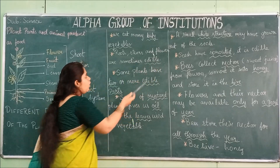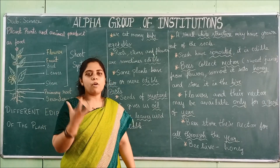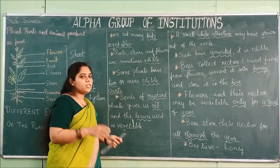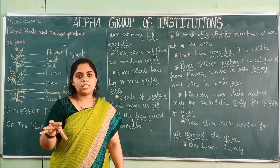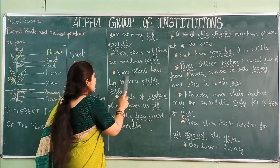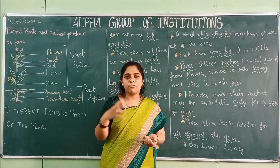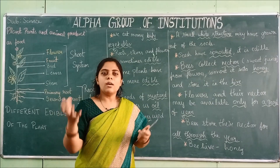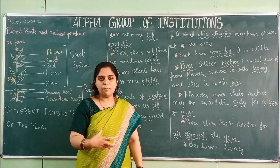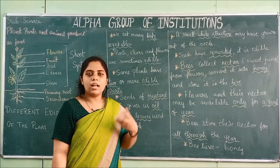Roots, stems, and flowers are also sometimes edible. Potato is a root — it is an underground modified root that has been changed into a vegetable, but we are still eating a root. Stem — banana stem is consumed as food. Flowers are also edible sometimes. And some plants have two or more edible parts. For example, banana — you can eat the stem and the fruit.